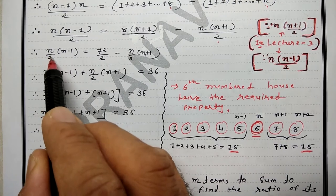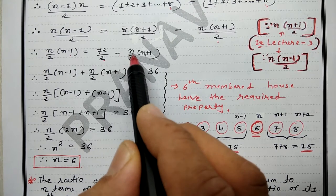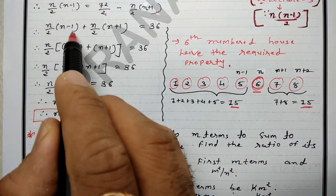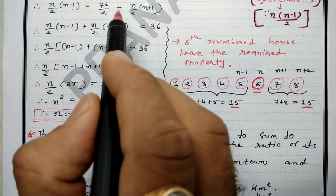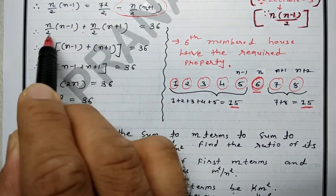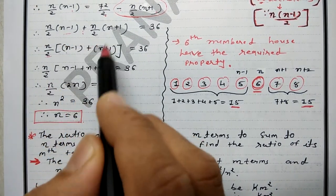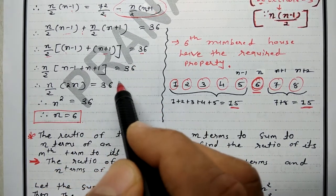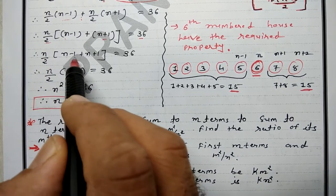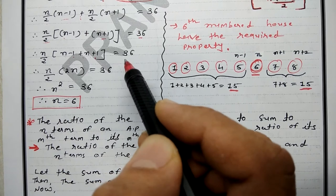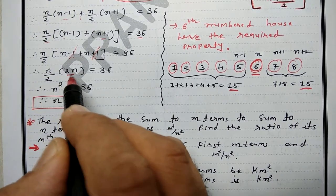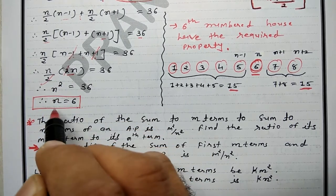So we have: N/2·(N−1) = 72/2 − N/2·(N+1). Bringing N/2·(N+1) to the left side: N/2·(N−1) + N/2·(N+1) = 36. Taking N/2 common: N/2·[(N−1)+(N+1)] = 36. Opening the bracket, the −1 and +1 cancel: N/2·(2N) = 36, so N² = 36, therefore N = 6.